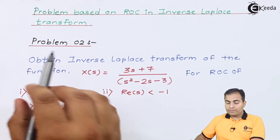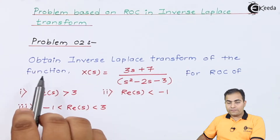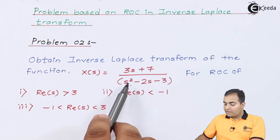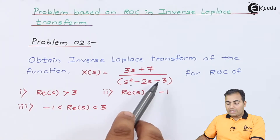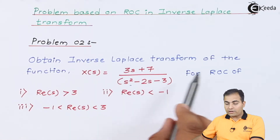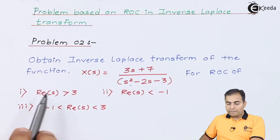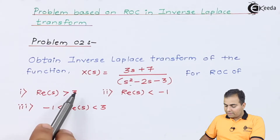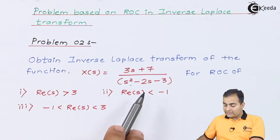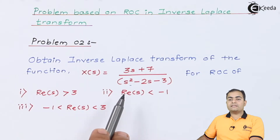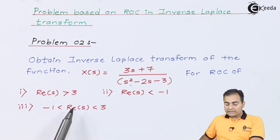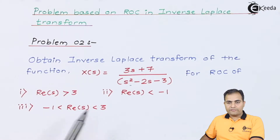Problem Number Two: Obtain the inverse Laplace transform of X(s) = (3s + 7) / (s² - 2s - 3). We have to find the inverse Laplace transform for three ROCs: first, Re(s) > 3, which is a right-handed sided ROC; second, Re(s) < -1, which is a left-handed sided ROC; and third, the ROC exists between -1 and 3, which is a two-sided ROC.